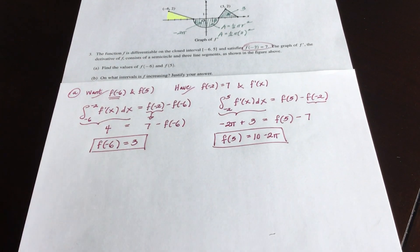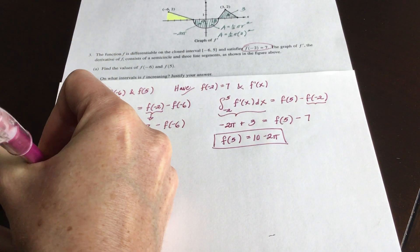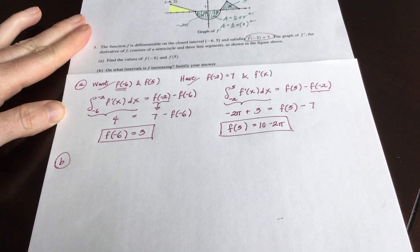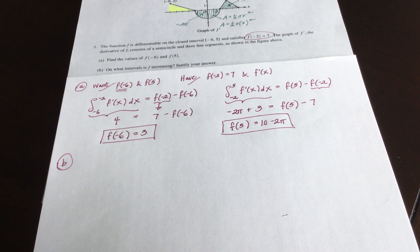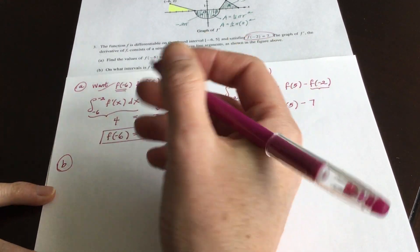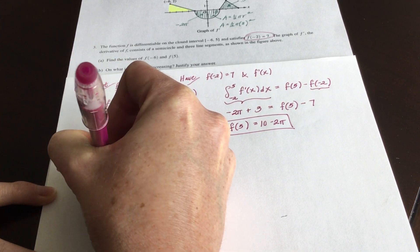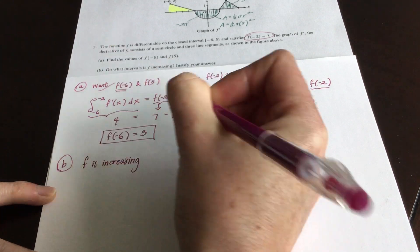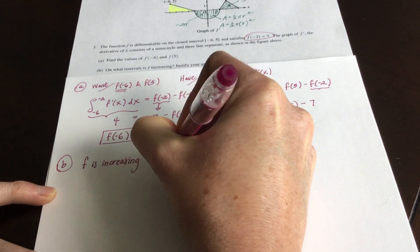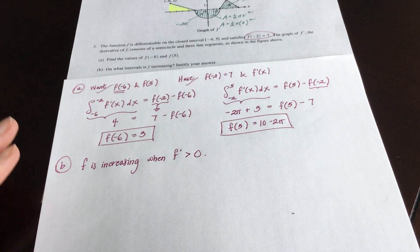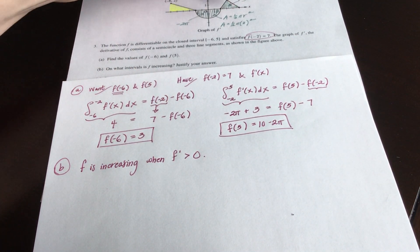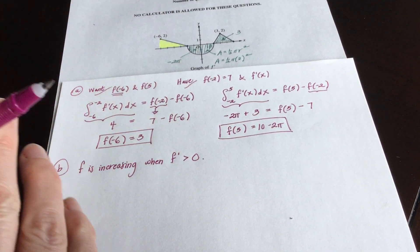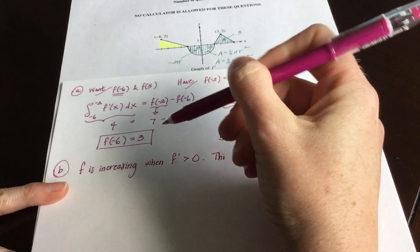Part B asks on what intervals is f increasing — justify your answer. F is increasing when the derivative f prime is positive. So we're looking for intervals where the y-coordinates on the graph of f prime are positive.